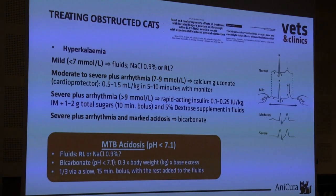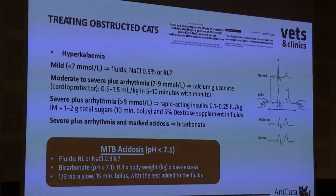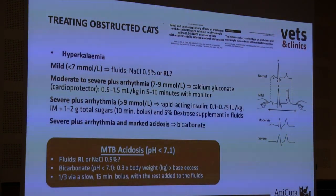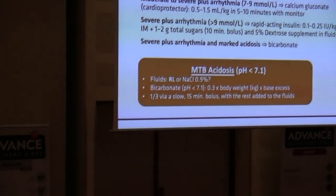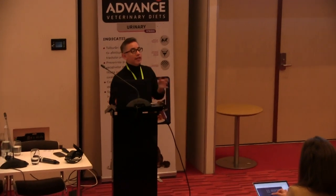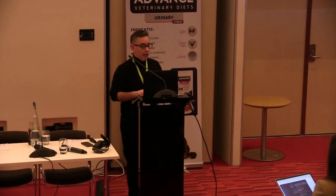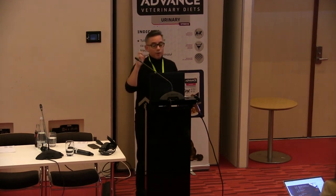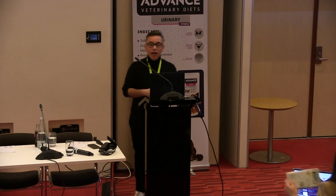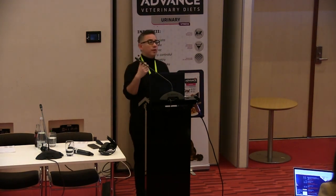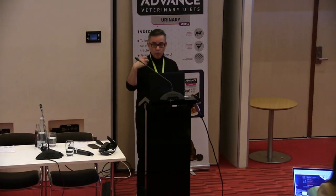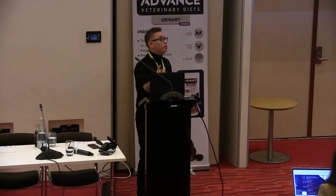How do we treat hyperkalemia? When a cat presents mild hyperkalemia, fluid therapy alone is sufficient, and probably within four to six hours the potassium will drop if the cat is unblocked. For moderate to severe hyperkalemia with arrhythmia, you have to use a cardiac protector like calcium gluconate at the appropriate dose. Apply it slowly and always monitor the ECG, because it can produce arrhythmias. For severe arrhythmias, we can use insulin — insulin drives glucose into cells and potassium follows alongside the glucose.